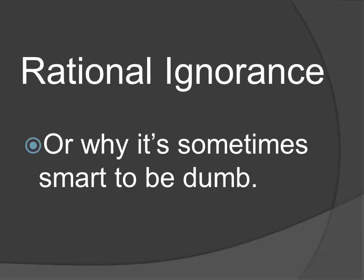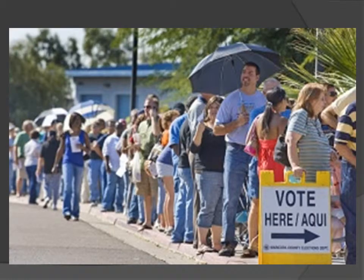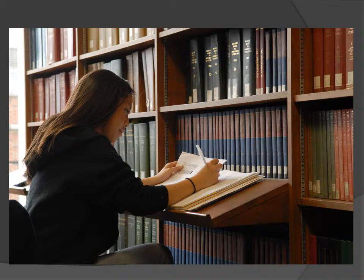The theory of rational ignorance explains why people choose to be uninformed or ignorant about issues. Anthony Downs introduced this theory in 1957 to explain why being poorly informed about political issues for voters in a democracy is a rational decision, rather than the result of laziness or apathy. This is because a single vote is very unlikely to change the results of an election. Because each vote only has a negligible impact on the outcome, the time spent researching candidates is not worth the benefit of casting a well-informed vote. If a person's vote is effectively irrelevant, then a rational person should choose to spend only a minimal amount of time deciding how to cast it. Thus, in a large election, the normal voter will be rationally ignorant.